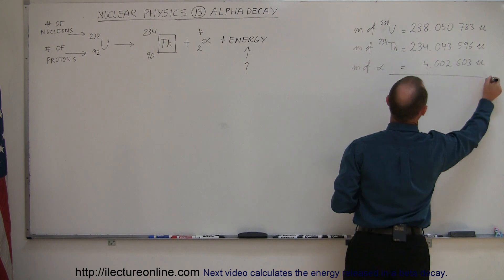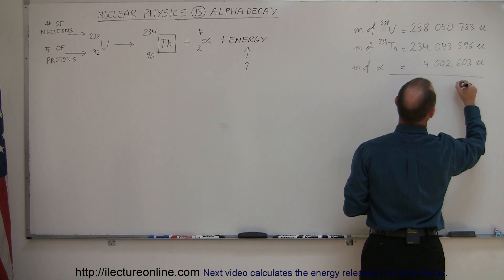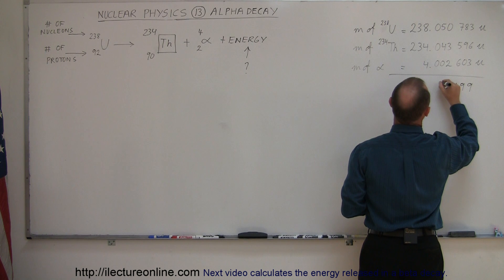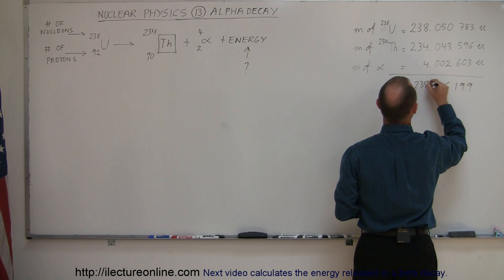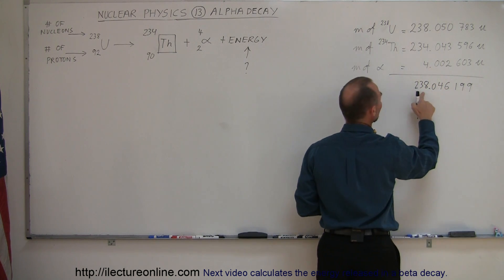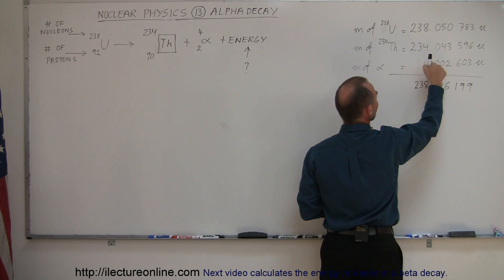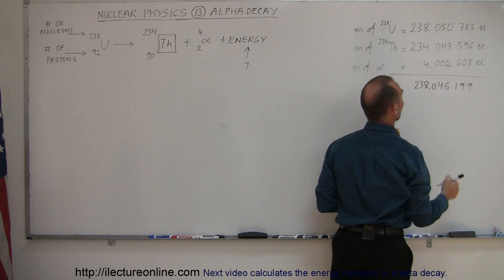So if we add these two together, what do we get? We get 238.046199 atomic mass units, and you can see that this number right here, which is the sum of these two masses, is less than that mass right there.